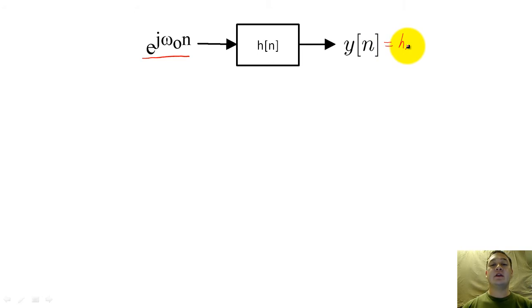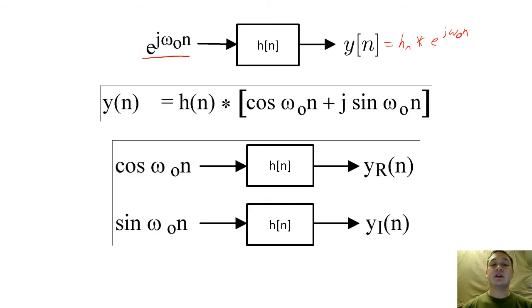As with any signal, y of n will equal the convolution of the impulse response function with the input signal. If we convert e^(jω₀n) to Cartesian coordinates using Euler's relation, we realize that our original system is actually a pair of systems with real-valued inputs and outputs.